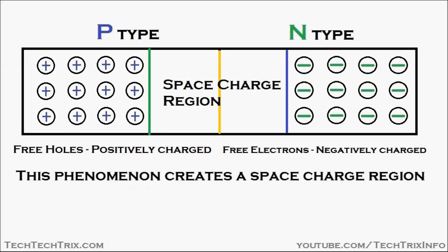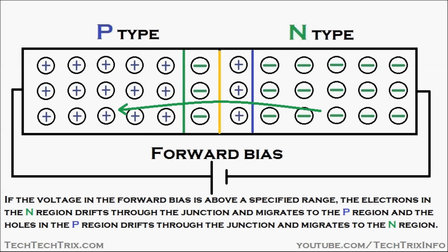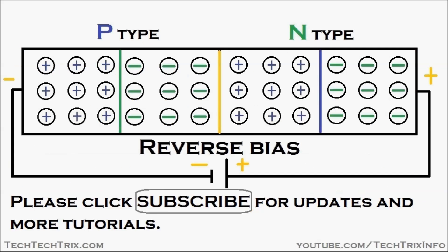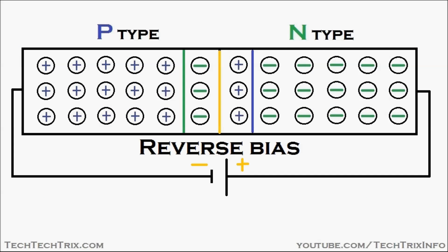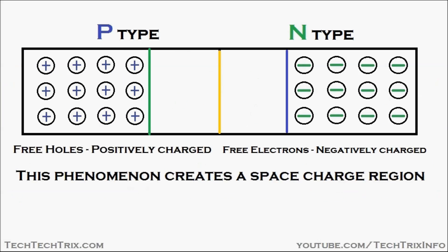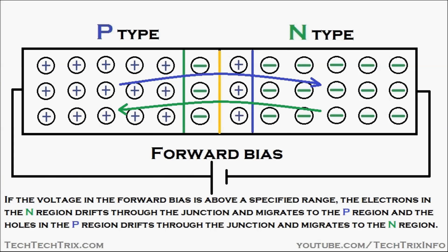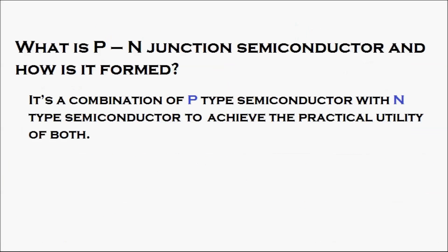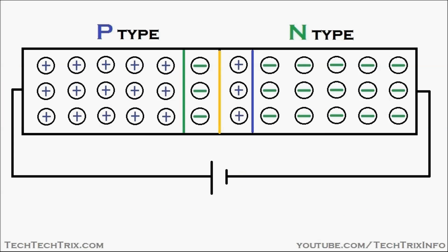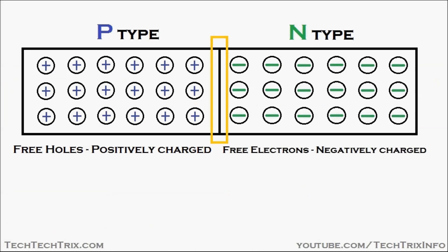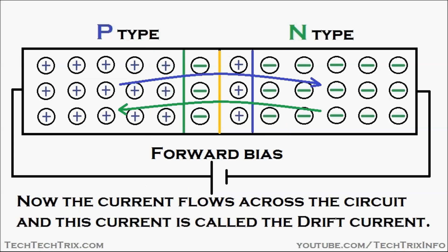This tutorial animation covers how a PN junction semiconductor works, what is forward bias and reverse bias, what is diffusion current and drift current, and what is avalanche breakdown.